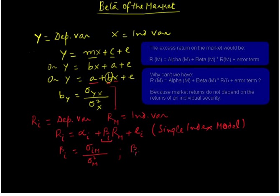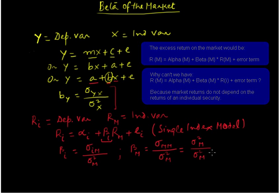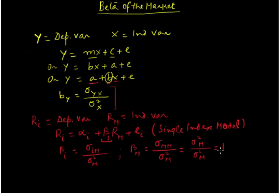What are we going to write? We are going to write on the numerator: covariance between m and m, divided by the variance of m. We know that covariance between m and m is simply equal to variance of m. So we have variance of m over variance of m, which equals 1. And therefore, the beta of the market is equal to 1.